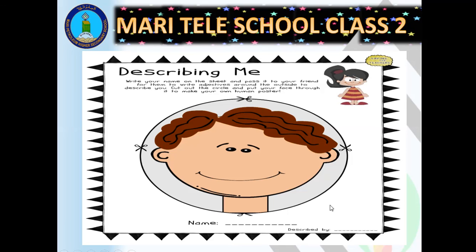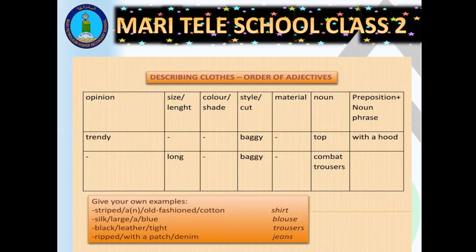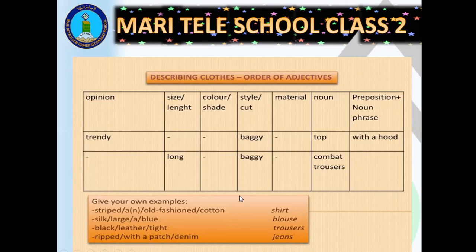Now let's see the order of adjectives when describing clothes. First, size or length — you can say long or short. Then the color or shade. Then the style — for example, baggy. Then the material — is it made of cotton, lawn, or leather? Then you use the noun — is it a top or combat trousers? And finally a preposition with a noun — like 'with a hood' — which also describes the clothing item.